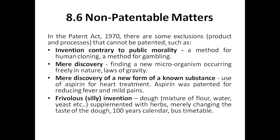For example, there are some examples mentioned here. First one: invention contrary to public morality. The basic requirements for a patent are that it should be novel, it should have a use case, and at least an industrial use case. But you cannot go doing something very bad. One example is human cloning — since you know it is a new thing, you cannot go for human cloning. Or any method for gambling. All these things come under something which hurts or destroys public morality.